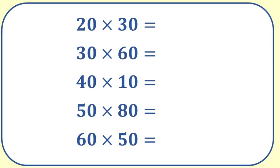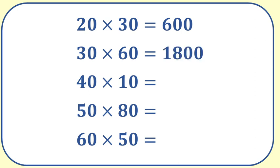Here are some practice examples. Pause the video and try them before carrying on. 20 times 30 equals 600. 30 times 60 equals 1800. 40 times 10 equals 400.